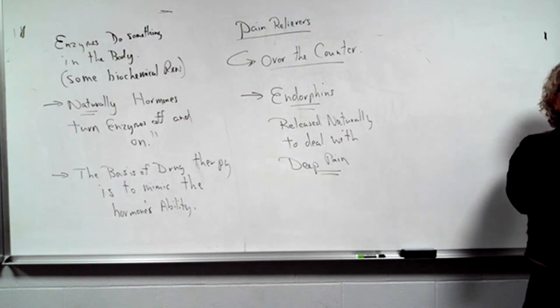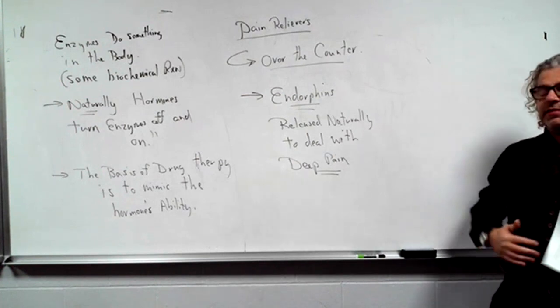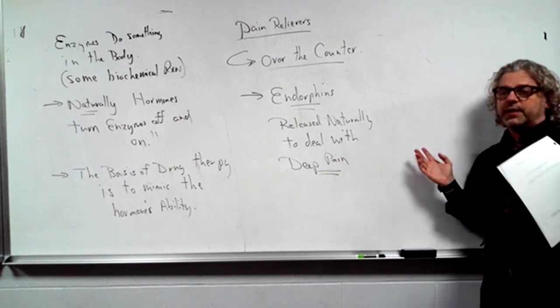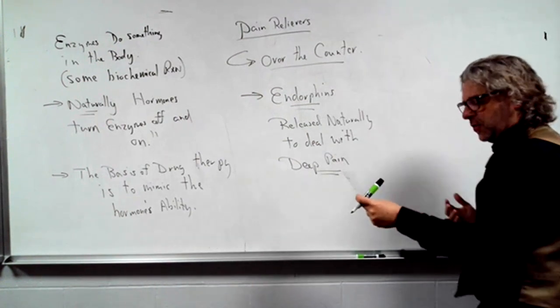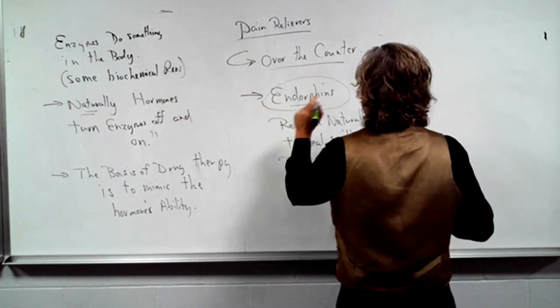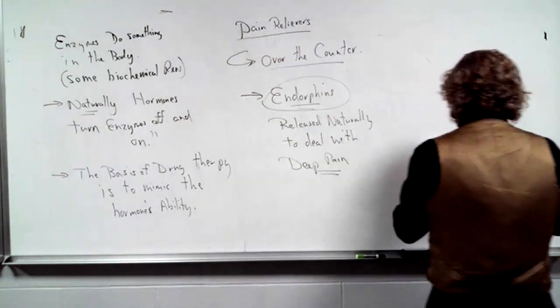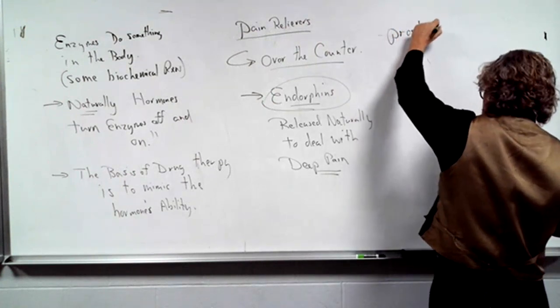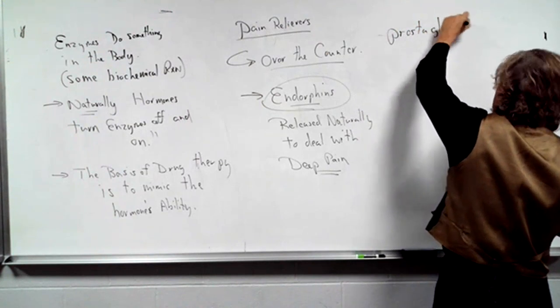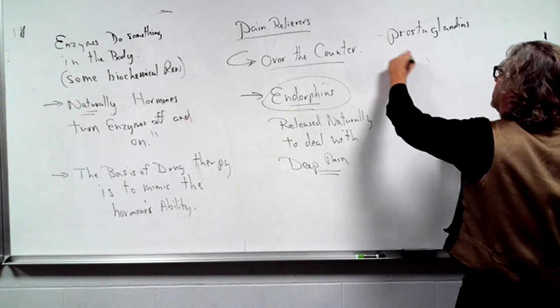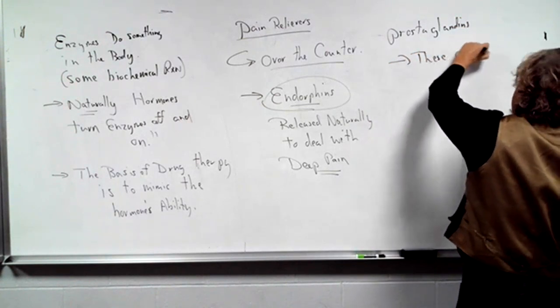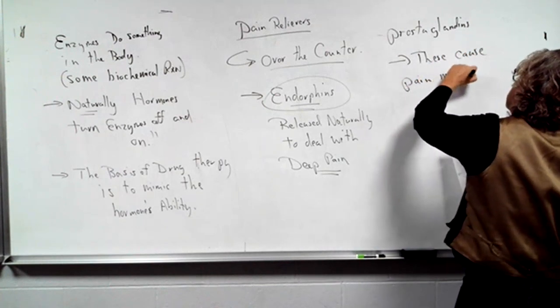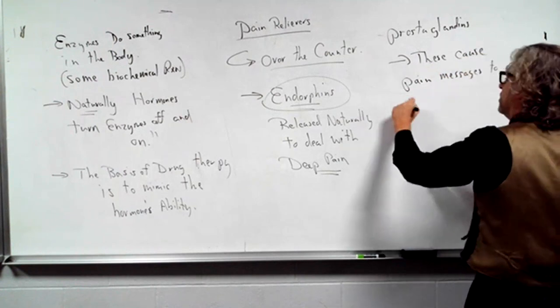To deal with deep pain. If you're saving someone from a burning building or something like that, you might say, I felt no pain. But I ran over all this glass. That would be all the endorphins. You can get endorphin released from exercise. If somebody exercises, their pain goes away in some respects. Then there's another biochemical, which I'm still going to do with the pain relievers. Another biochemical is prostaglandins. And oddly enough, these cause pain messages to go to the brain.